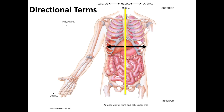These terms can also be used on your limbs. For instance, your thumb is lateral to your pinky. The second pair of terms refers to parts that are above or below each other: superior and inferior. Your nose is superior to your mouth, which is superior to your chin, which is superior to your neck.